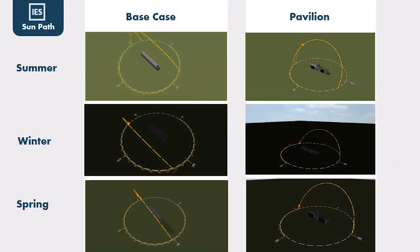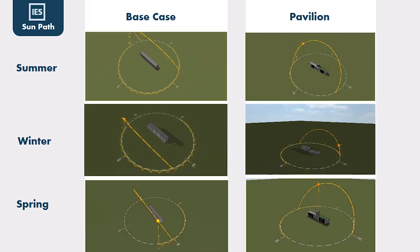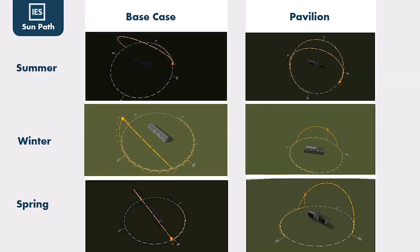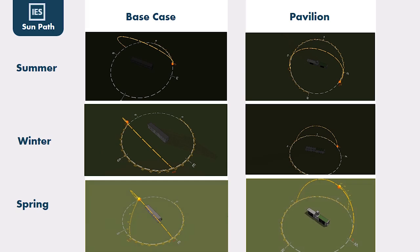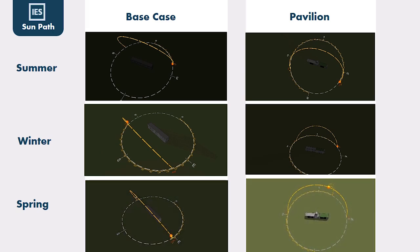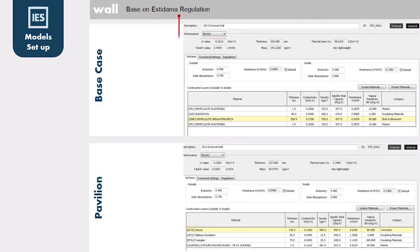In terms of achieving sustainability, we used IES software to create different scenarios for a base case and compare it with the pavilion scenarios, measuring improvement in daylight factor, temperature, ventilation, glare, and solar gain. We assigned materials in the base case to satisfy Istidama regulation and used it as a benchmark for our pavilion — for example, adding insulation material to lower the U-value.